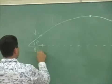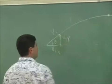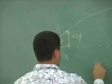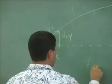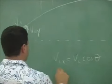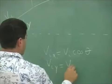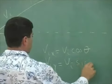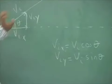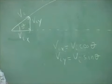The initial x-component is v-initial times cosine theta, and the initial y-component is v-initial times sine theta. So the sine of the angle gives the y component of velocity and the cosine gives the x component.